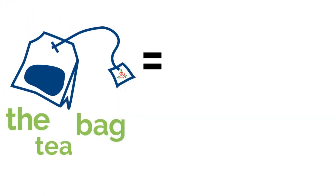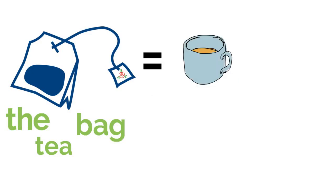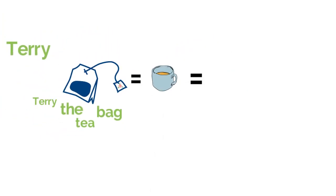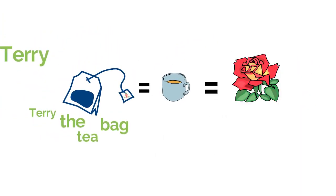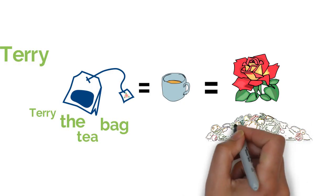Because although right now I'm a teabag and I do make a nice cup of tea, it's true. Hidden inside me are the ingredients for a rose garden or a vegetable patch.